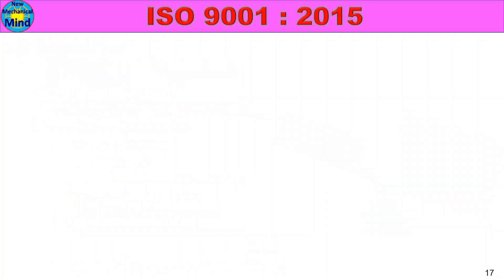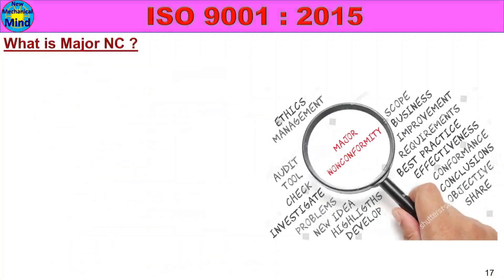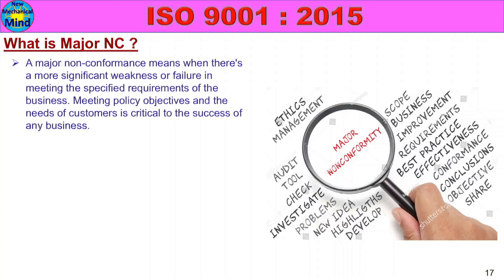What is a major non-conformance? A major non-conformance means there is a more significant weakness or failure in meeting the specified requirements of the business. Meeting policy objectives and the needs of customers is critical to the success of any business. If there is a weakness or failure in meeting these, that is major non-compliance.